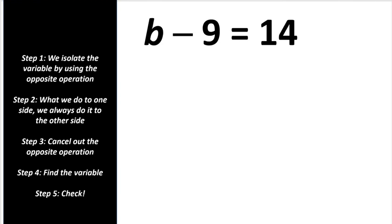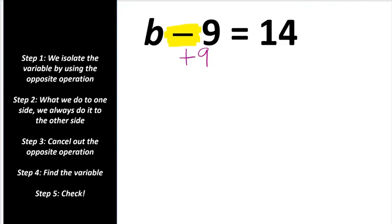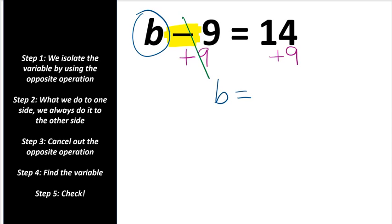Let's do another example. We have b minus 9 equals 14. We are subtracting 9, and the opposite of subtraction is addition, so we're going to add 9. What we do to one side, we must do to the other side to keep it balanced. Minus 9 plus 9 is 0, so cross it off — we're left with b equals 14 plus 9, which is 23.